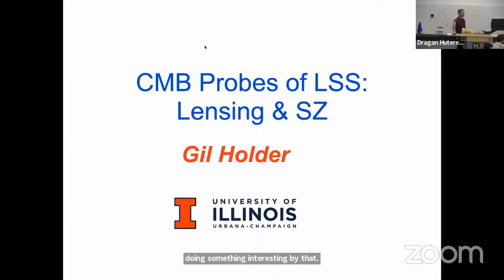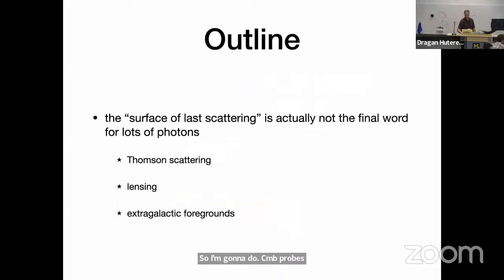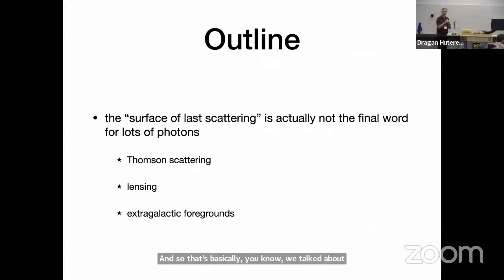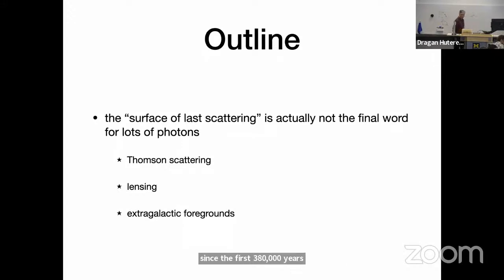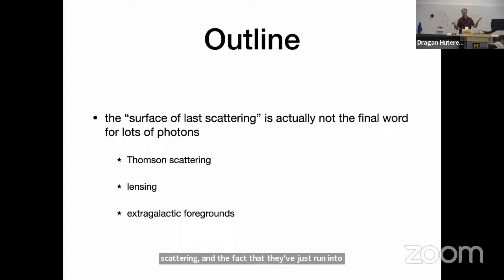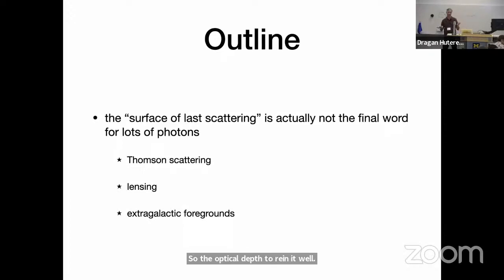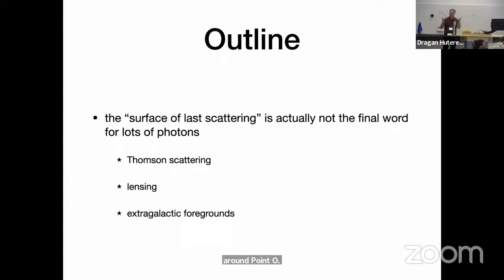I'm going to do CMB probes of large-scale structure. We talked about the surface of last scattering as being when the photons last met anything in the universe. That's actually not true. Lots of the photons in the universe have actually had meaningful interactions since the first 380,000 years. And the most meaningful ones would be Thomson scattering — they've just run into electrons. And then lensing.